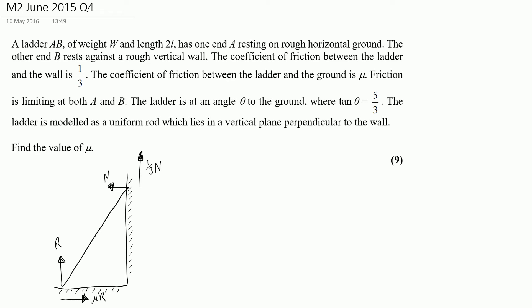The only other thing missing is W, and we've got information that the length is 2l, so I can label this bit l and this bit l. Now as with any moments question there's really not a lot of choice in what we're doing — we're always going to start the same way and resolve horizontally.